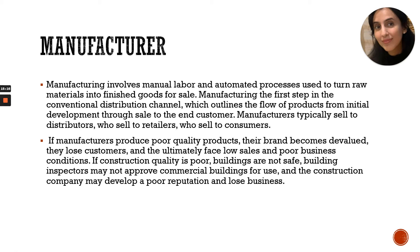The more players you have in the supply chain, the more costly a material will be. If you only have two or three layers from distributor to retailer to consumer, costs are lower. But if there are more intermediaries each taking their profit, the price increases. That is why some materials are expensive while others are cheaper — buying directly from the factory is cheaper because of fewer supply chain layers. If manufacturers produce poor quality products, their brand becomes devalued and they lose customers, ultimately facing low sales and poor business conditions.